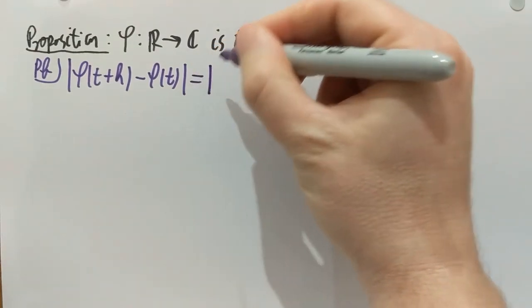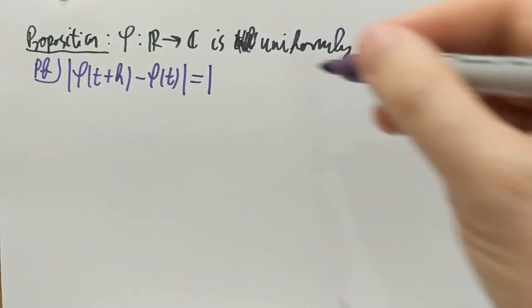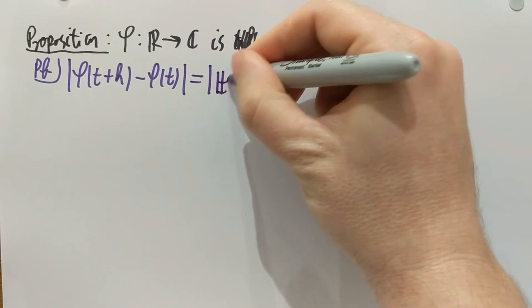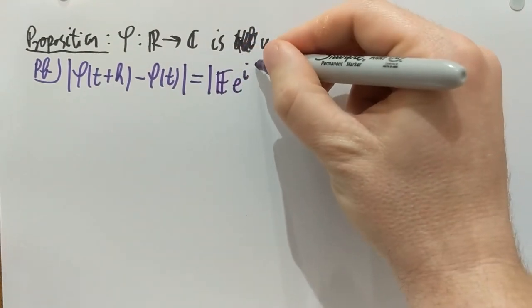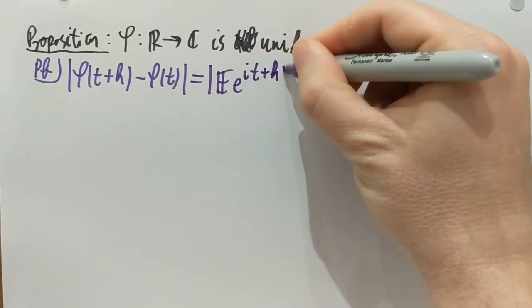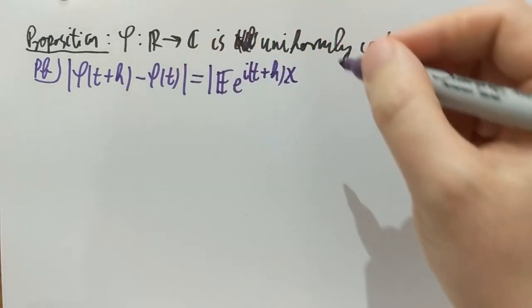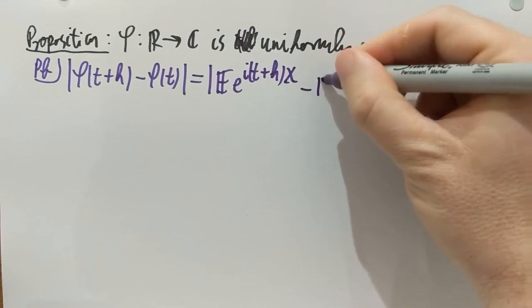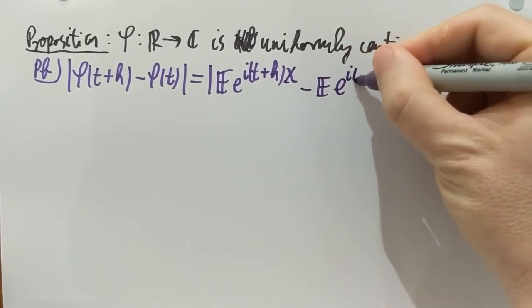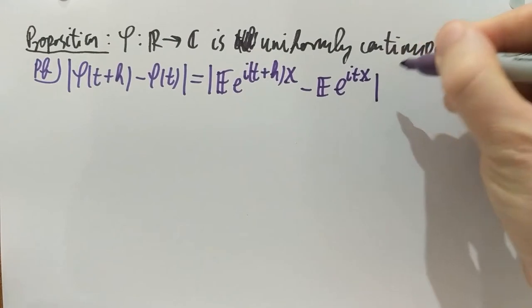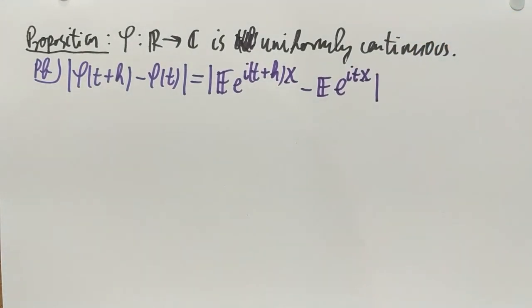Ok, so what is φ? Phi was the expectation of exponential i·t, well, instead of t I have to put here t plus h, x. This is φ of t plus h minus the expectation of φ of t exponential i·t·x. And I take a difference and an absolute value.